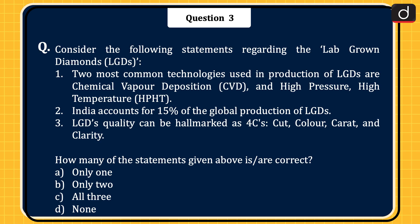Next question: Consider the following statements regarding lab-grown diamonds (LGDs). 1. The two most common technologies used in production of LGDs are chemical vapour deposition (CVD) and high-pressure high-temperature (HPHT). 2. India accounts for 15% of the global production of LGDs. 3. LGDs' quality can be assessed by the 4Cs: cut, colour, carat, and clarity. How many of the statements given above is/are correct? Only one, only two, all three, or none.